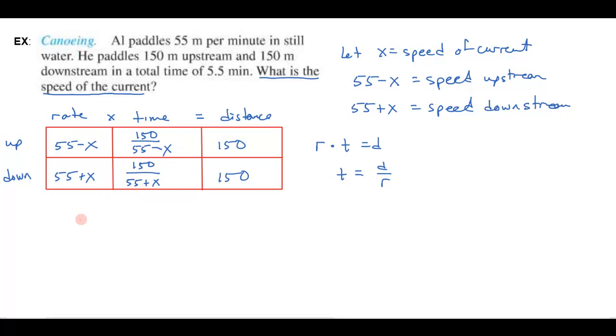Now I know that the time going up, 150 over 55 minus x, and notice this really represents the time it takes to go upstream. If I add to that the time it takes to go downstream, I will get the total time, which is five and a half minutes. There's my equation. This is the time to go up, this is the time to go down, and this is the total time. So let's go ahead and solve it.